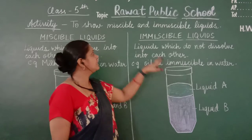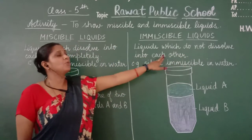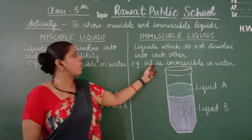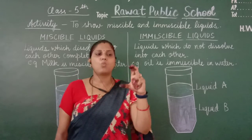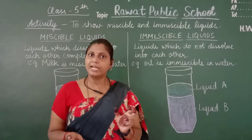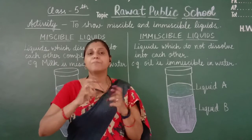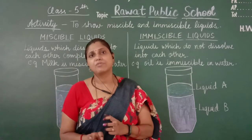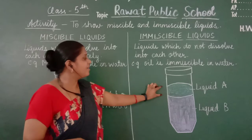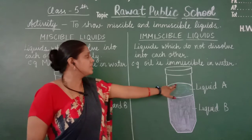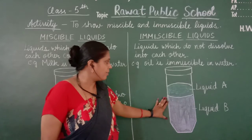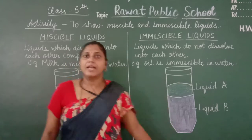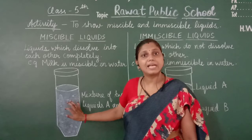Immiscible liquids are the liquids which do not dissolve into each other — they do not get mixed with each other. An example is oil and water. If I take water and pour oil over it, no matter how much time I take to mix the liquids, oil will never get mixed with water. Oil will form a separate layer over the water. Suppose liquid A is oil and liquid B is water — when I pour oil into water, it will form a layer and will not mix with the water particles.